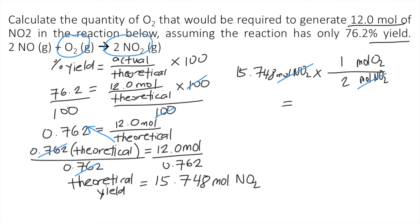So 15.748 times 1 divided by 2. This will give you approximately 7.87, if you round it off, moles of O₂. So this is the answer to the question.